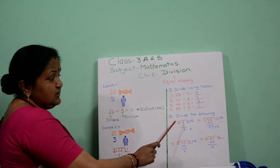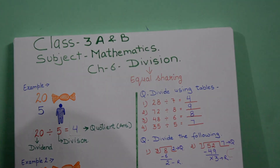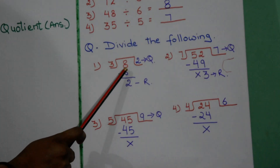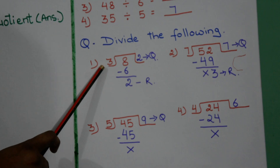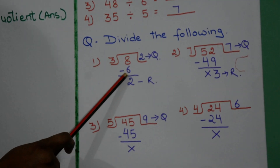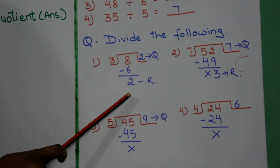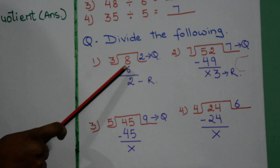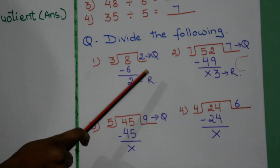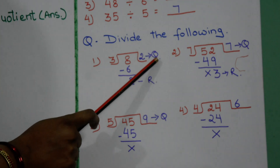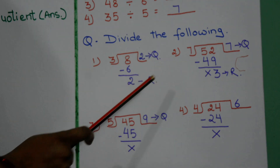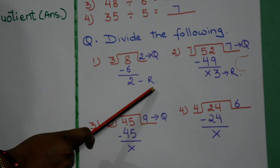Now the next question — you have to divide them using this division sign. Now 8 divided by 3: 3 twos are 6, minus them, and 8 minus 6 is 2. So 2 is your remainder and 2 is your quotient. Instead of writing the full words I have written only Q for quotient and R for remainder.